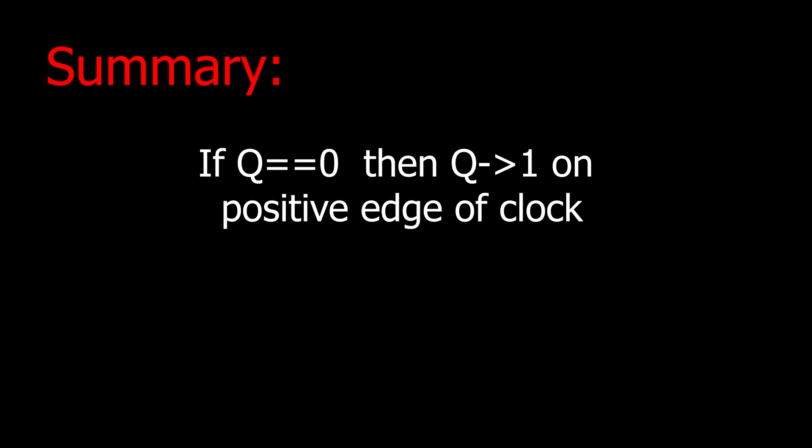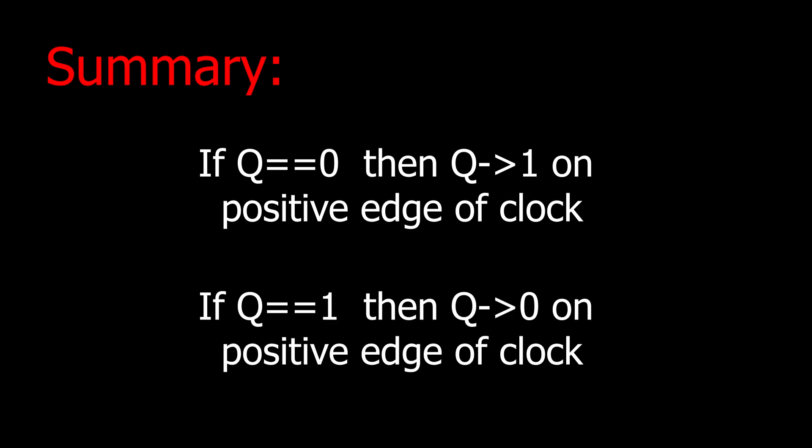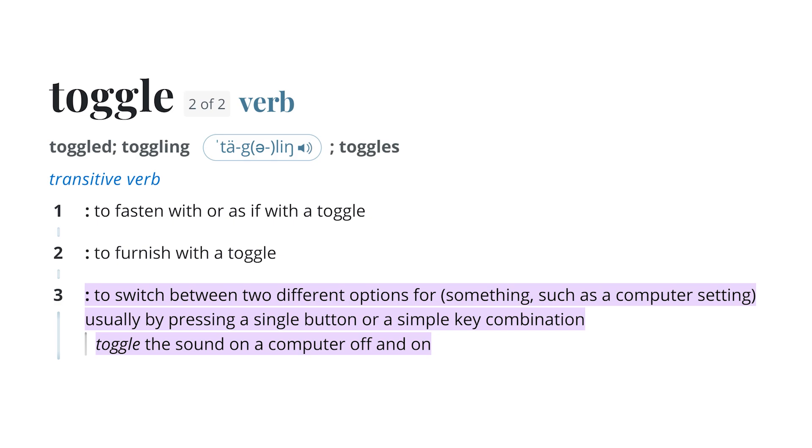In summary, if the output is 0, it will toggle to a 1 on the positive edge of clock, and if the output is already 1, it will toggle to a 0 on the positive edge of clock. The word toggle in this context means to change state from 0 to a 1, or from a 1 to a 0.